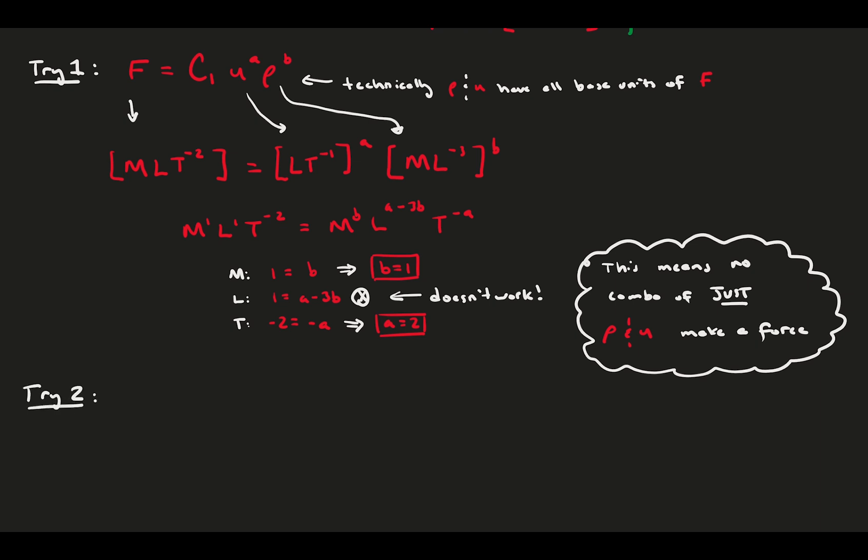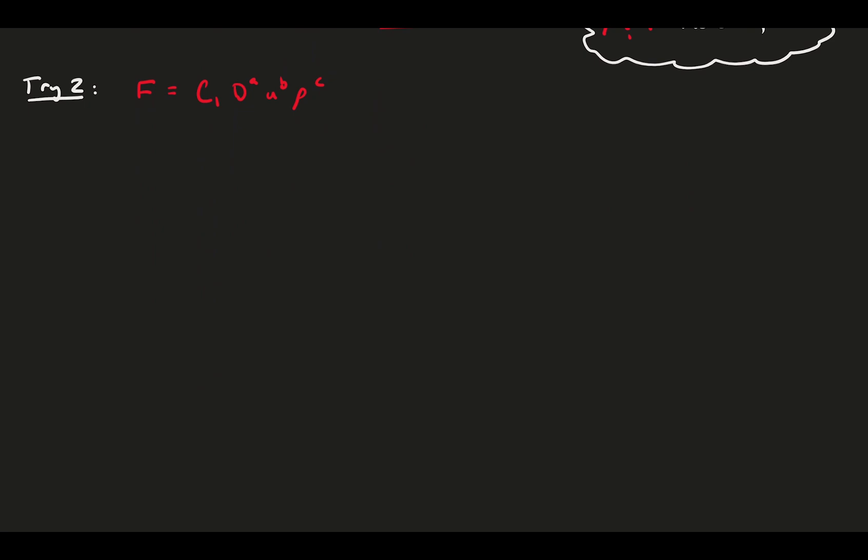This means that there are no combinations of velocity and density that gives us the units of force. While they have the necessary base dimensions, mass, length, and time, there's no set of exponents that make it work. So, we need to try again with another combination. The only other combination of parameters that have the combined base dimensions of force are diameter, velocity, and density. We do the generalization first, putting a constant out front and exponents a, b, and c.